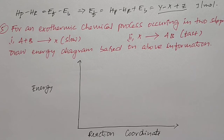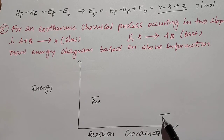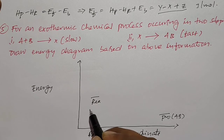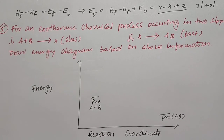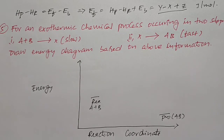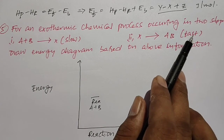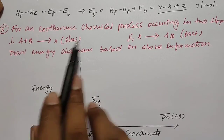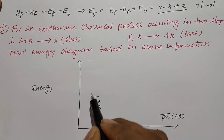For an exothermic reaction, the energy level of reactants is high and the energy level of products is low. Since the reaction occurs in two steps, the energy diagram must have two peaks. The first elementary reaction is the slow reaction, and the second is the fast reaction. The peak of the slow reaction is always higher than the peak of the fast reaction. So the graph shows a higher first peak representing the slow step and a lower second peak representing the fast step, with a reaction intermediate between them.